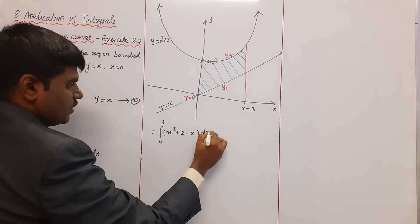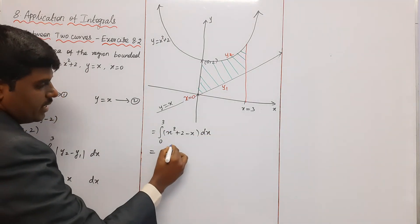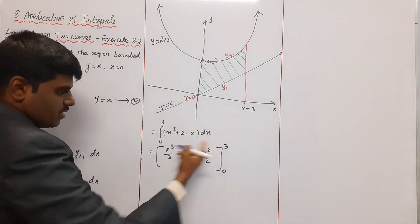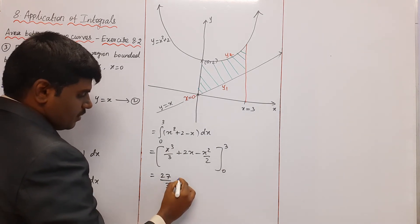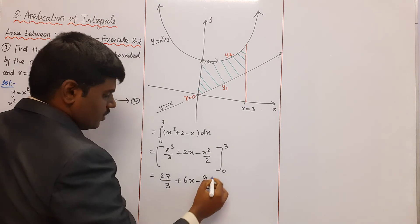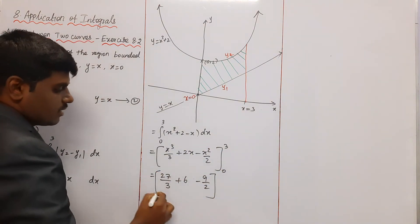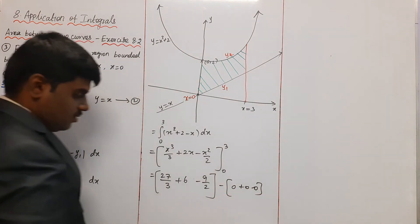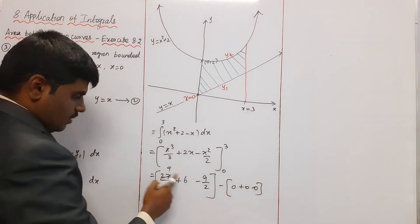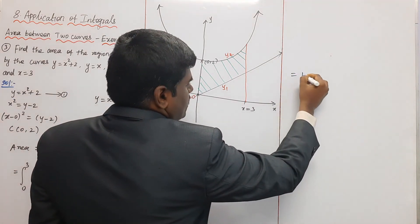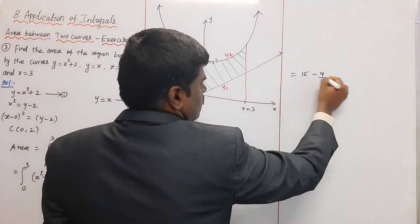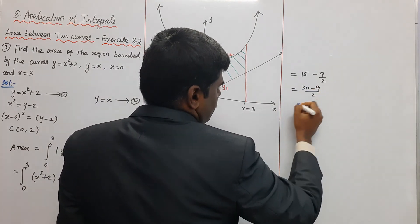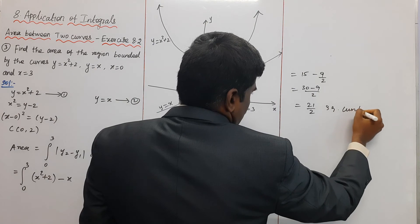Integrating ∫₀³ (x² + 2 - x) dx gives [x³/3 + 2x - x²/2] from 0 to 3. Substituting x = 3: 27/3 + 6 - 9/2 = 9 + 6 - 9/2 = 15 - 9/2 = 30/2 - 9/2 = 21/2. Substituting x = 0 gives 0. Therefore the area is 21/2 square units.